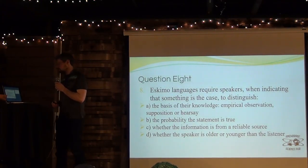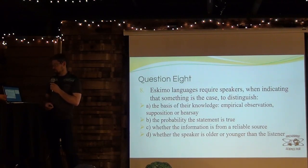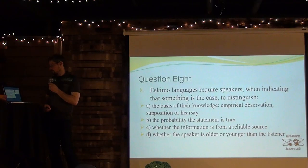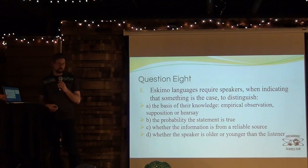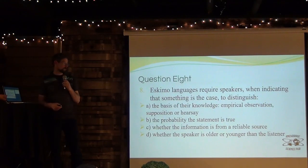Question eight. Evidential languages require speakers, when indicating that something is the case, to distinguish: A, based on their knowledge — empirical observation, supposition, or hearsay; B, the probability that the statement is true; C, whether the information is from a reliable source; or D, whether the speaker is older or younger than the listener.